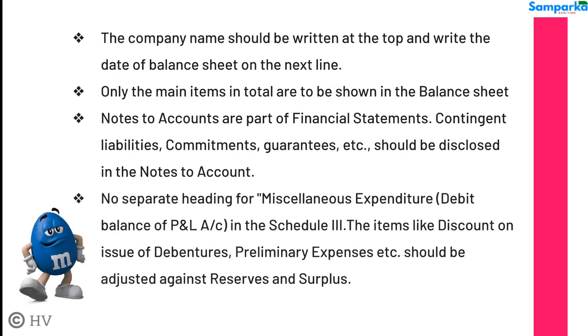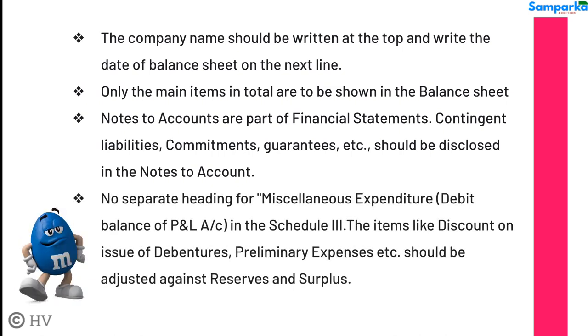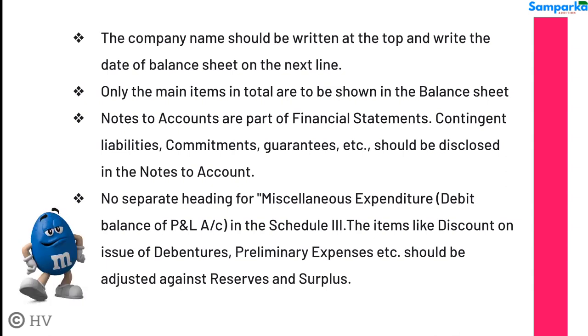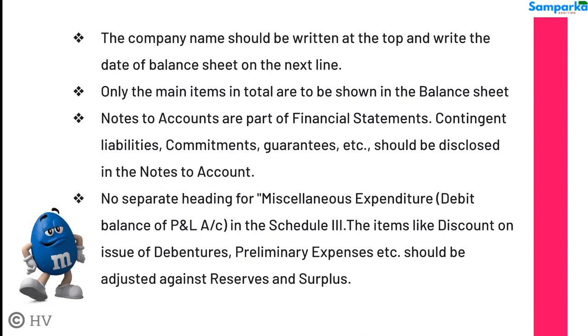In Schedule 3, items like discount on issue of debentures, preliminary expenses, etc. should be adjusted against reserves and surplus. The debit balance of the Profit and Loss Account is also handled under this provision.